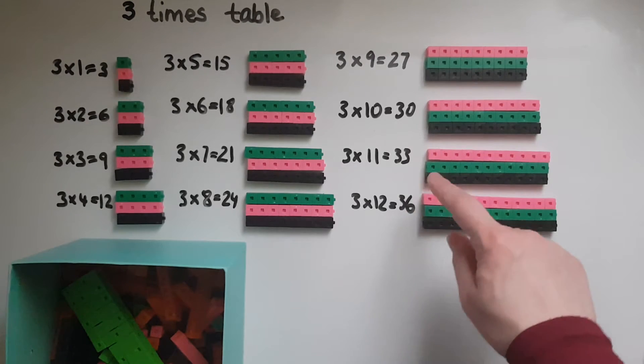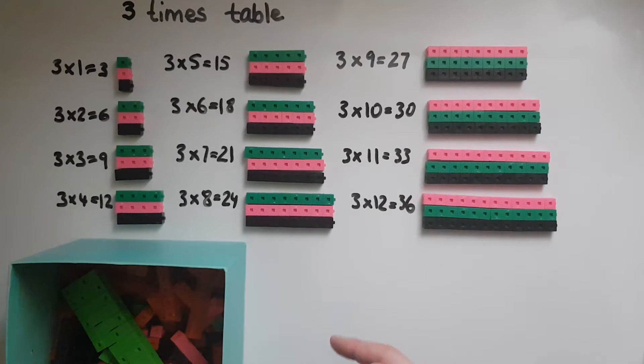And to do, for example, three times 12, there are different ways I could do this. I could do 12 and 12 and 12. So 12 and 12 is 24, another 12 is 36. Or I could do three lots of 10, which is 30, and three lots of two, which is six.